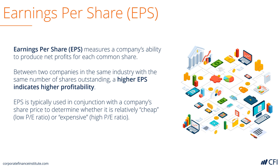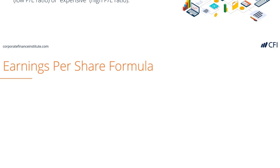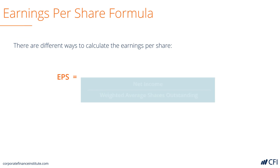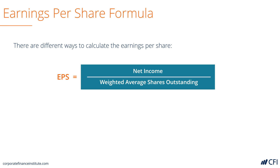A high price-to-earnings ratio indicates an expensive stock, while a low price-to-earnings ratio indicates a cheap stock. Let's look at the earnings per share formula — there are different ways to calculate it. Basic earnings per share is net income divided by weighted average shares outstanding.